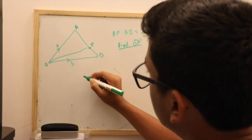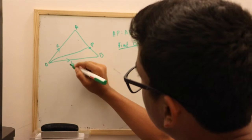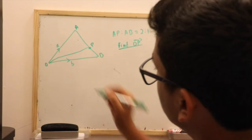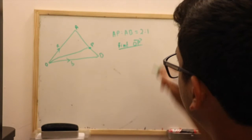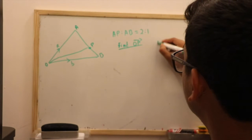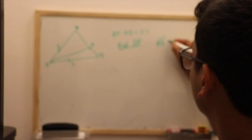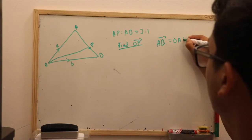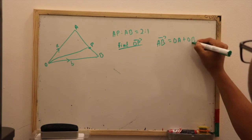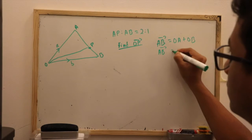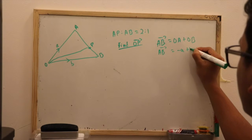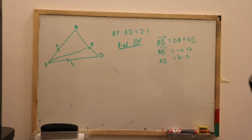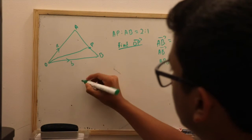The following question asks us to find vector OP in terms of A and B from the triangle. We are given the ratio AP to AB equals 2 to 1. To get from A to B, we go in the direction of A to O and then O to B, giving A to O plus O to B, where A to O is negative A and O to B is vector B. So AB equals B minus A.